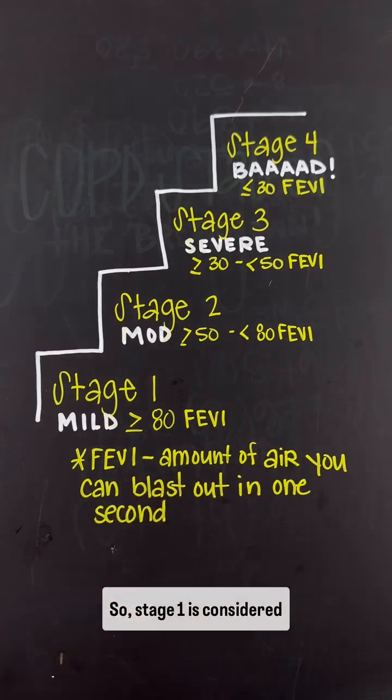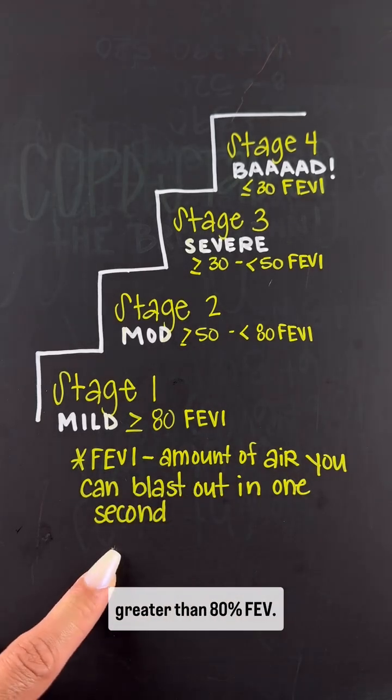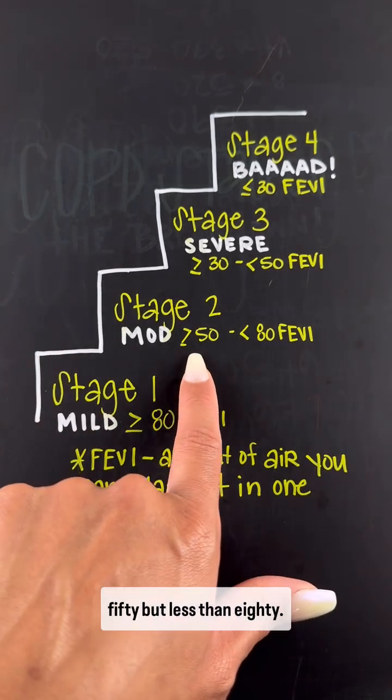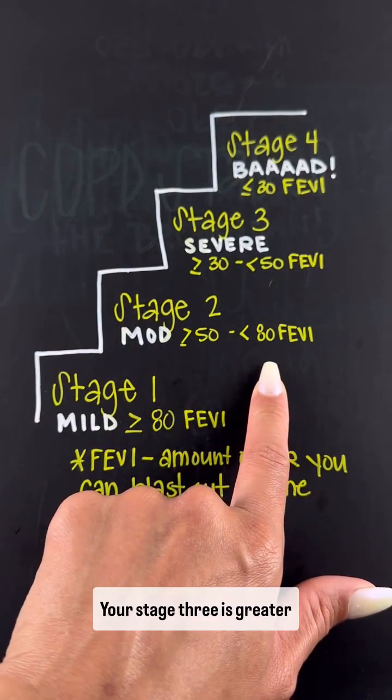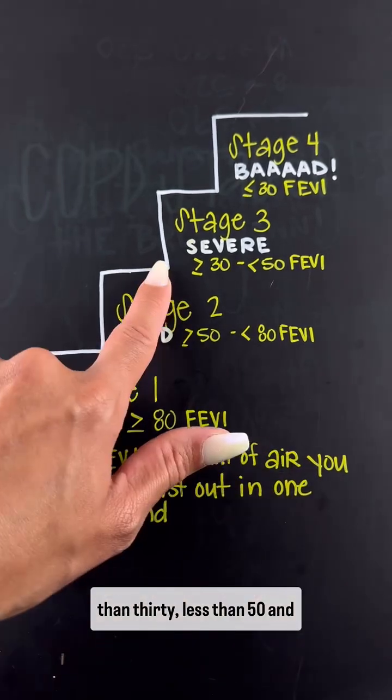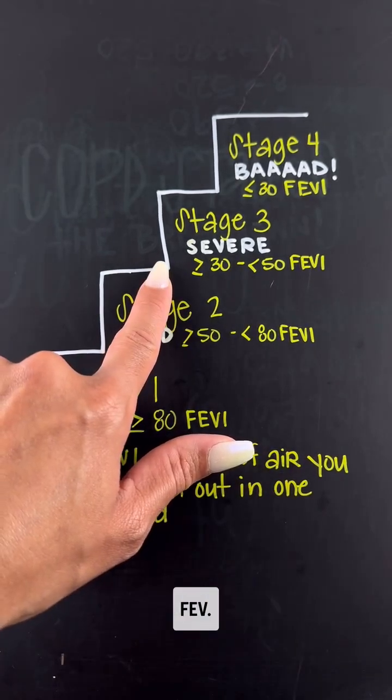Stage one is considered greater than 80% FEV1. Stage two is greater than 50 but less than 80. Stage three is greater than 30, less than 50. And stage four is less than 30 FEV1.